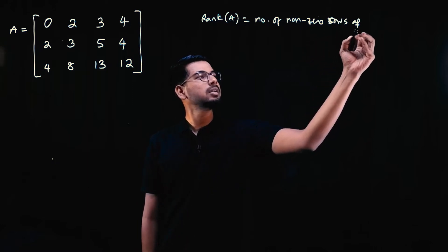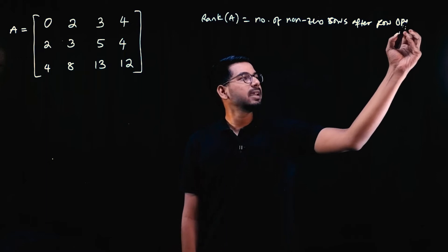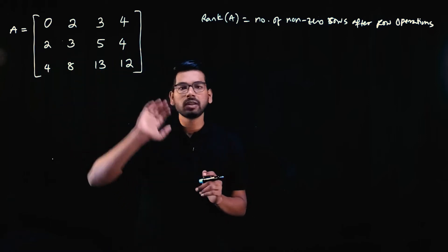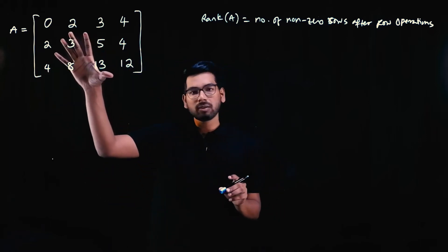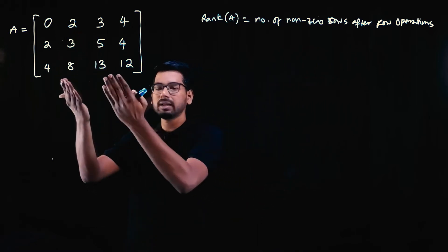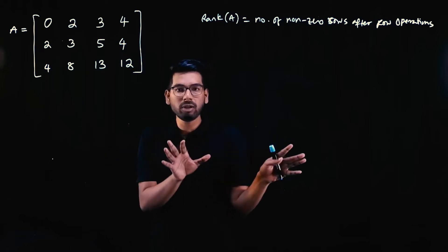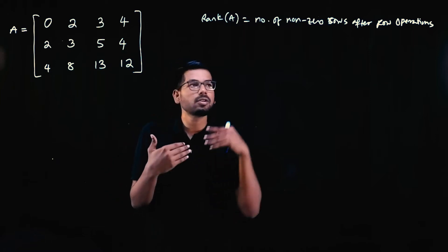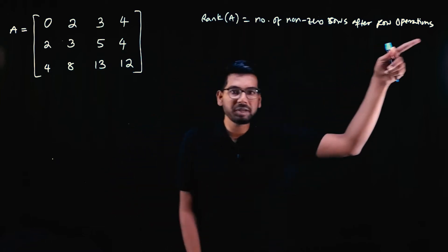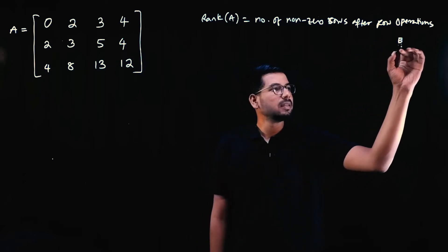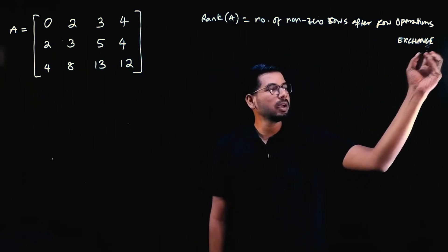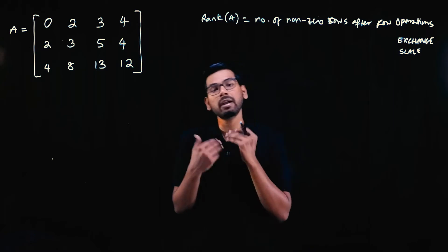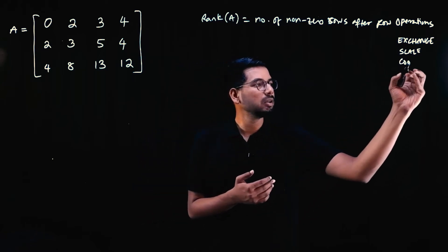We do row operations with the intention of making the elements of the rows zero. At some point we cannot do any more operations to make rows zero, and the remaining non-zero rows give us the rank. There are three kinds of row operations: we can exchange two rows, we can scale a row by multiplying or dividing, and we can combine two rows.